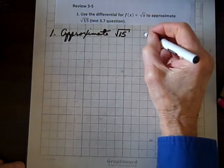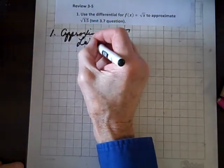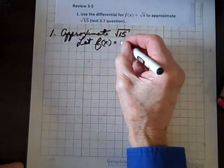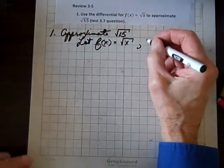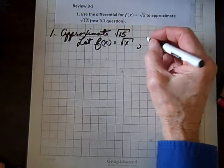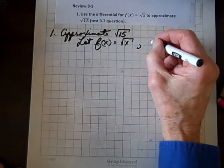We're going to let f of x equal the square root of x, and we'll declare x to be the closest perfect square to 15, so the closest perfect square to 15 is 16.